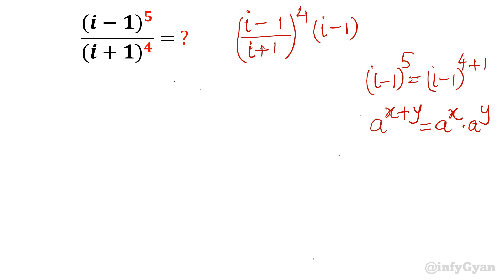Now I will rationalize this (i-1) over (i+1). What is the process of rationalization? Just take the conjugate of the denominator. So (i+1) times (i-1). In the numerator and denominator we will multiply.